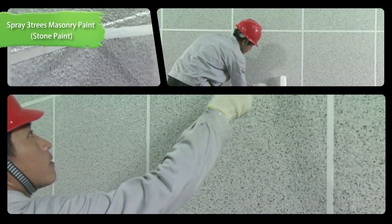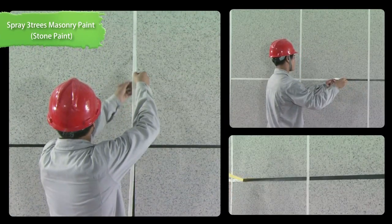If you cannot remove the tape, you can use a knife to rip it. Please be aware of protecting the film. Only when the masonry paint stone paint is completely dry, you can take the next step.